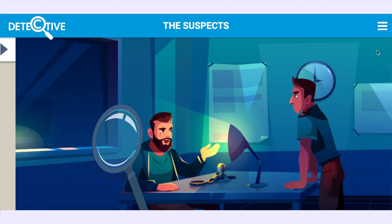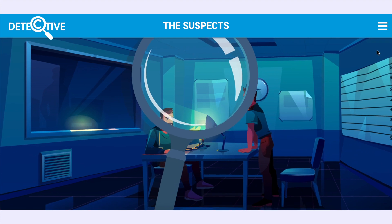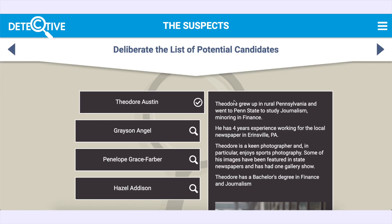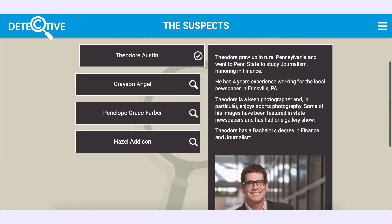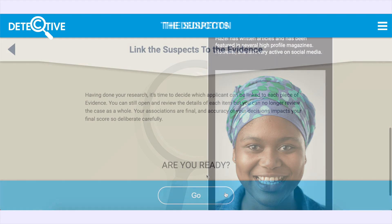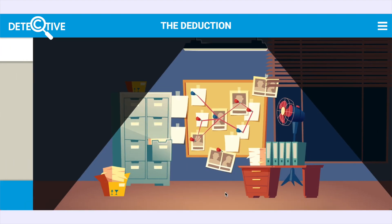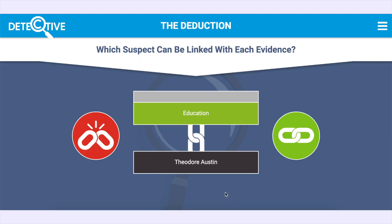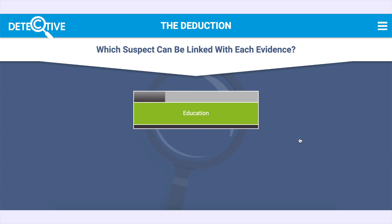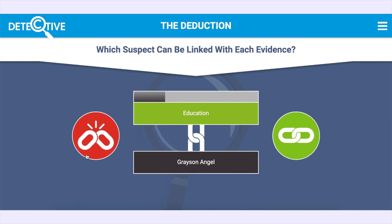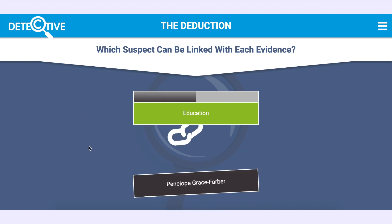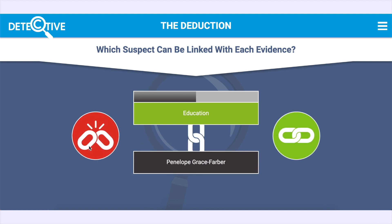Step three, the suspects: deliberate the list of potential suspects. Step four, the deduction: this is where you'll link the suspects to the evidence. Note, it's not always a one-to-one linking — one piece of evidence may fit multiple suspects.